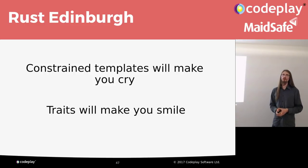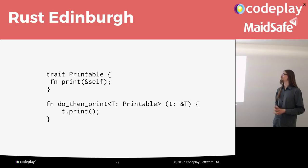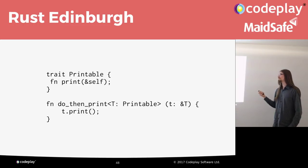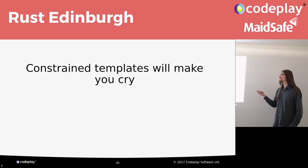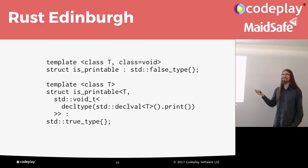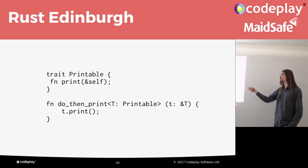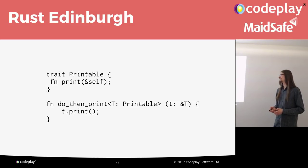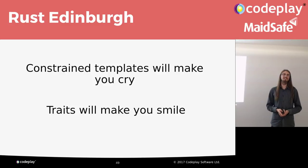Traits will make you smile quite wildly. We have a trait printable with a function that takes a self-reference and returns nothing. Then I just say: I'm doing do_that_print, I take a printable, I'm going to print it. That's it. This is almost entirely equivalent to all of that nonsense. Even if you do not know Rust, you can look at this and tell what it's doing. The T colon printable syntax is just syntax - it's understandable. Constrained templates will make you cry, and traits will make you smile.